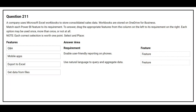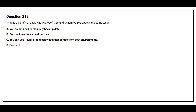Question 211: A company uses a Microsoft Excel workbook to store consolidated sales data. Workbooks are stored on OneDrive for Business. Match each Power BI feature to its requirement. The first requirement is 'enable user-friendly reporting on fonts' — the correct feature is Mobile Apps. The second requirement is 'use natural language to query and aggregate data' — the correct feature is Q&A.